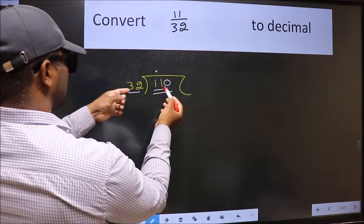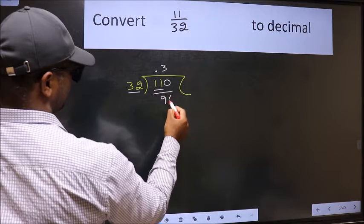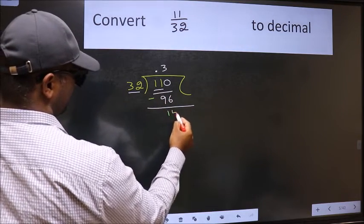A number close to 110 in 32 table is 32, 3, 96. Now, we should subtract. We get 14.